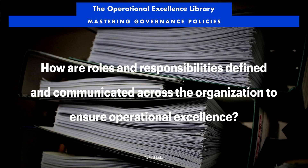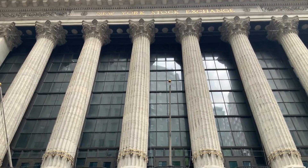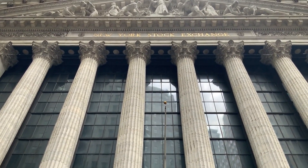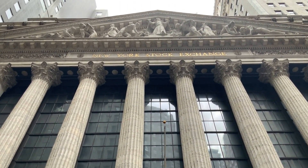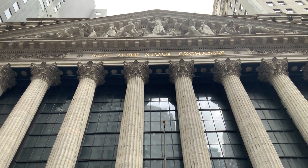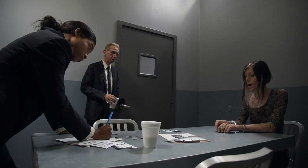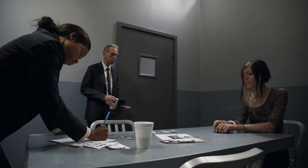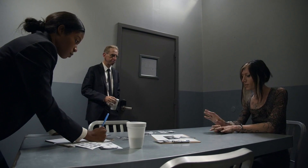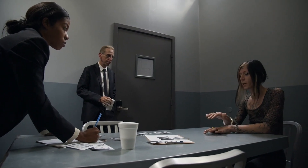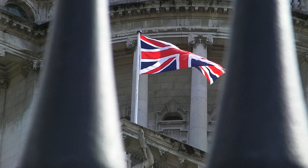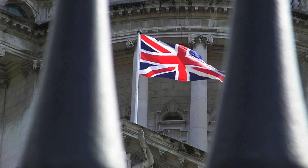Which governance framework and policy documents explicitly outline and communicate the defined roles and responsibilities to all stakeholders across the organization, thereby ensuring accountability and facilitating operational excellence? The RAGI Responsibility Assignment Matrix Framework and the Operational Excellence Policy are two essential governance documents that explicitly outline and communicate defined roles and responsibilities to all stakeholders across the organization, thereby ensuring accountability and facilitating operational excellence.